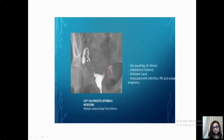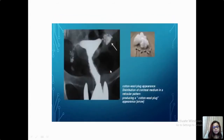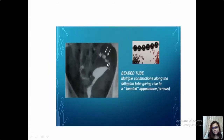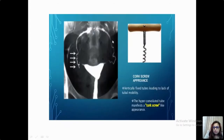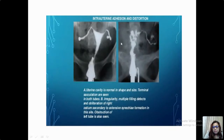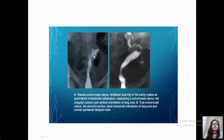This is a cotton woolish type appearance where contrast has accumulated in the mucosal folds. There is hydrosalpinx on one side and multiple diverticula on the other. Multiple strictures followed by dilatations lead to a beaded tube appearance — very classical of tuberculosis. This is a corkscrew tube with vertically oriented tubes with tortuosity. There may also be multiple adhesions and synechiae leading to distortion of the uterine cavity. Straight pipe-like tubes with tufted ends, and a pseudo-unicornuate appearance with a distorted uterine contour where one cornua is not visualized, are also seen.